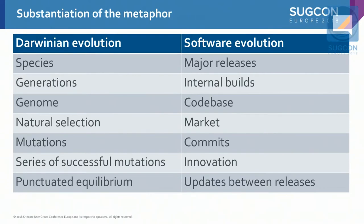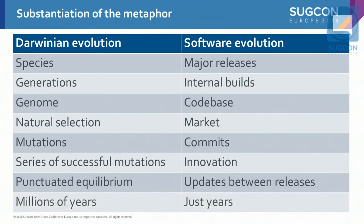This is a specialized term: punctuated equilibrium. It means that once a species is established, it will remain very similar for quite a long time because there is no environmental pressure to change. Software products are similar — between releases, they stay the same. They have some minor updates, but the market is not changing so rapidly for them to change more often than once a year, for example. This is why evolution takes millions of years and software evolution just takes years.